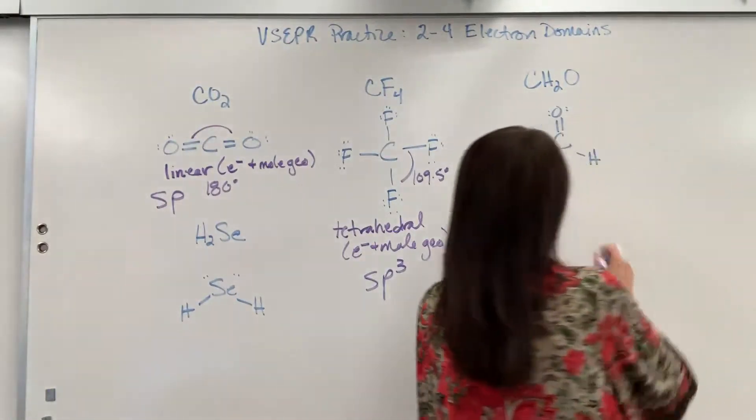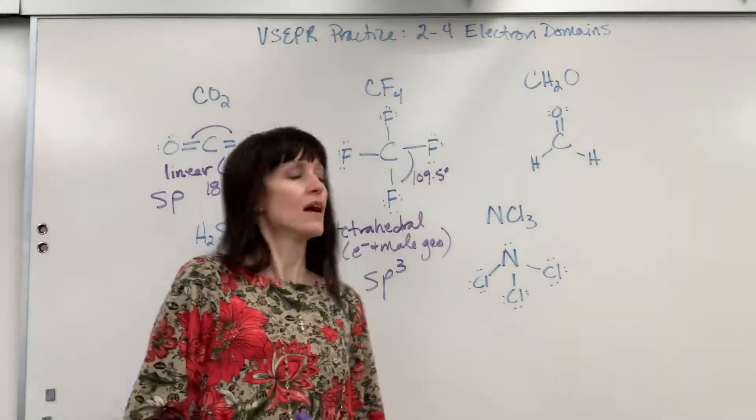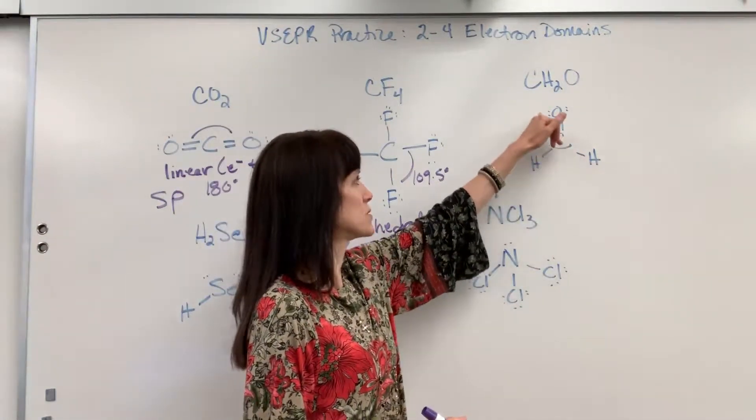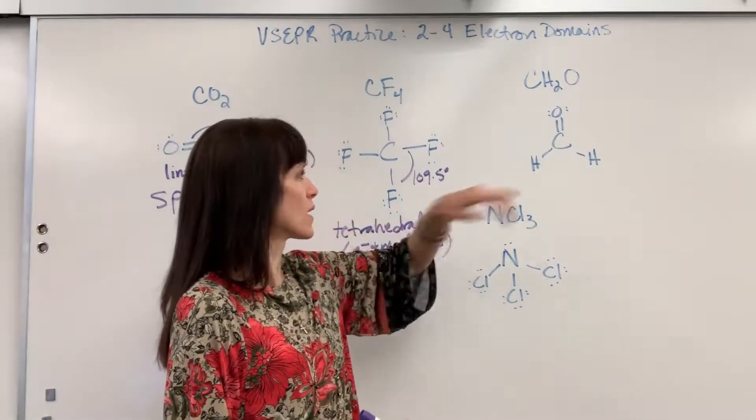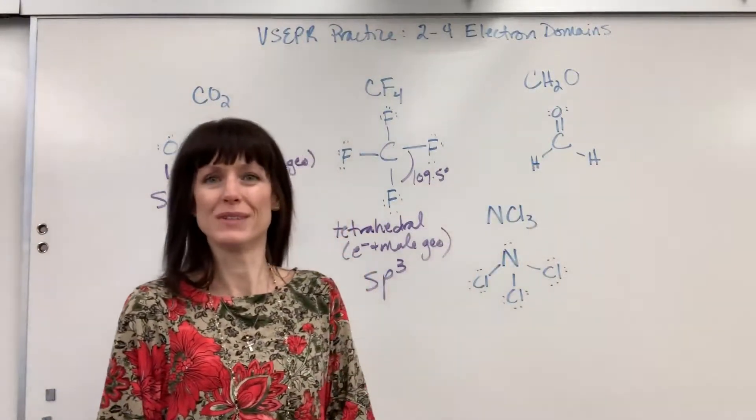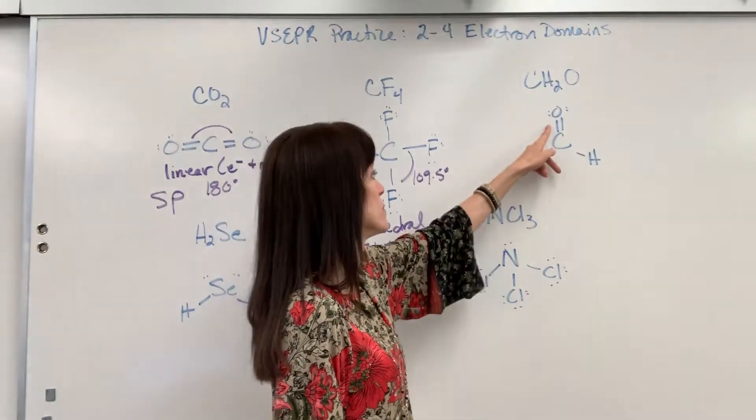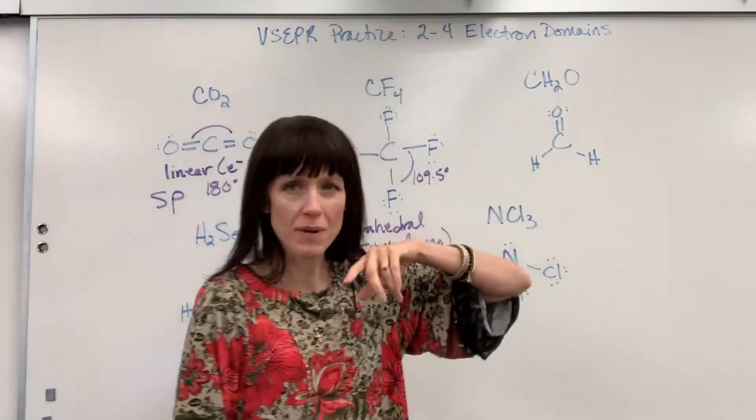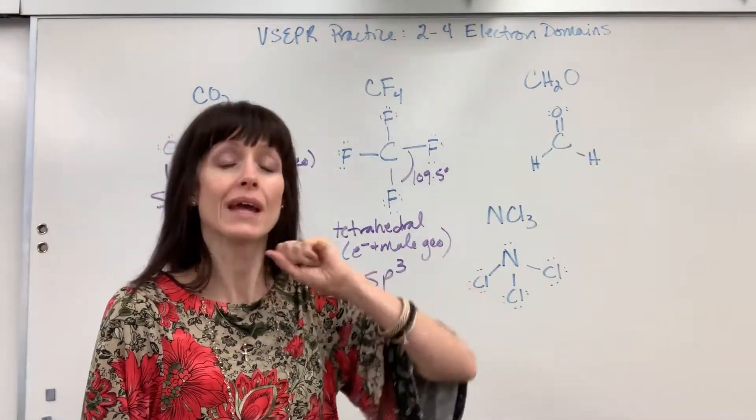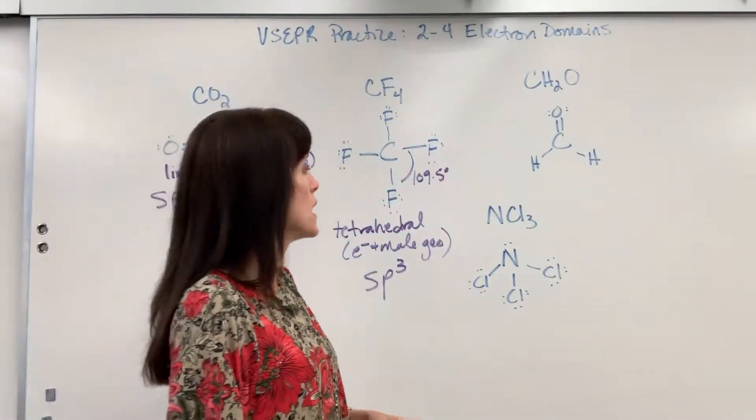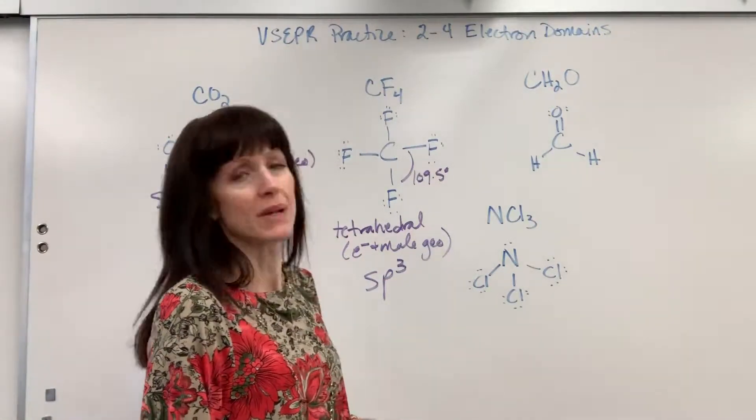Okay, let's come over here. We've got a CH2O. So we've got a carbon central atom, oxygen double bonded to that carbon, and then a hydrogen in two spots. So let's count the electron domains. One, two, three. Remember that double bond counts as one electron domain, one area where electrons exist.